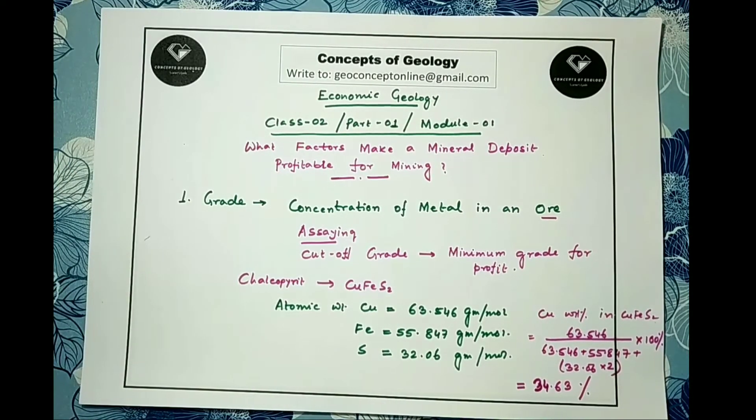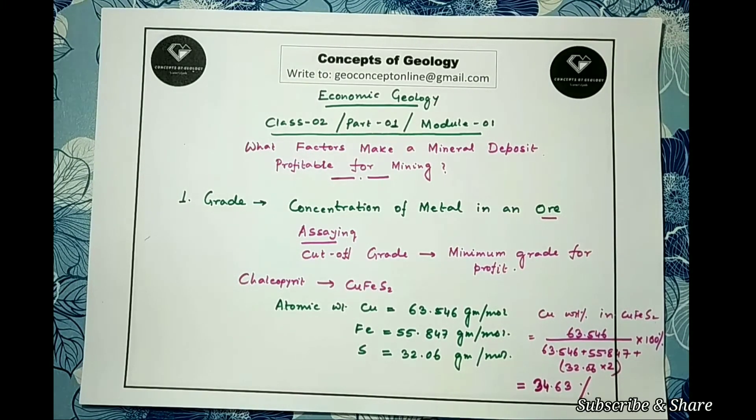Now if this is the case, then for chalcopyrite the grade of copper is always 34.63 percent. Am I wrong? We stated the definition of grade as the concentration of metal in an ore. Then as far as my ore is chalcopyrite, how is the grade of ore varying mine to mine? What is wrong in the definition?